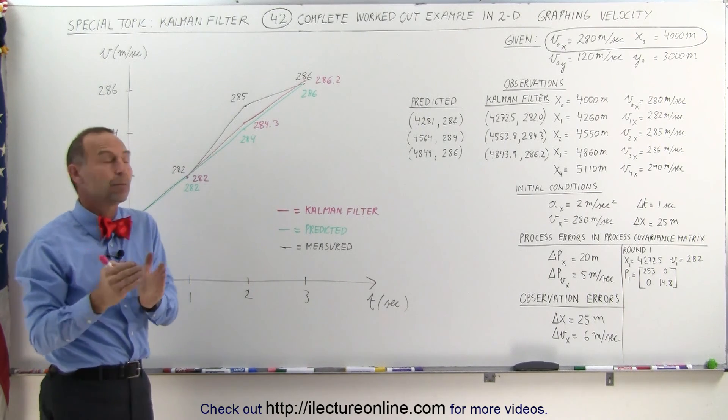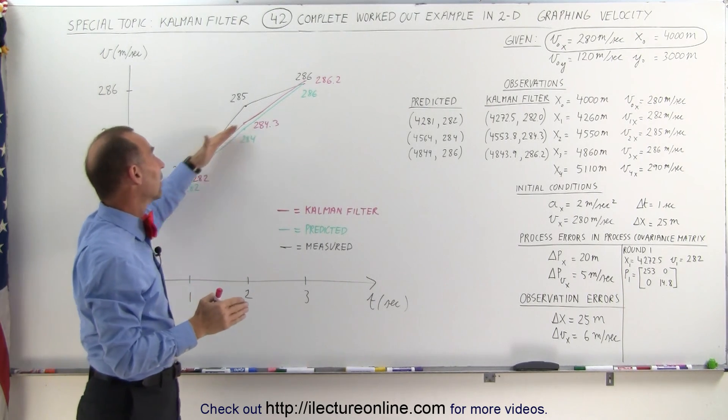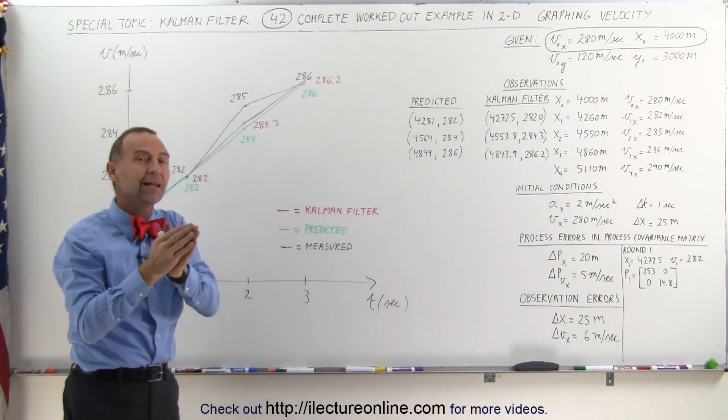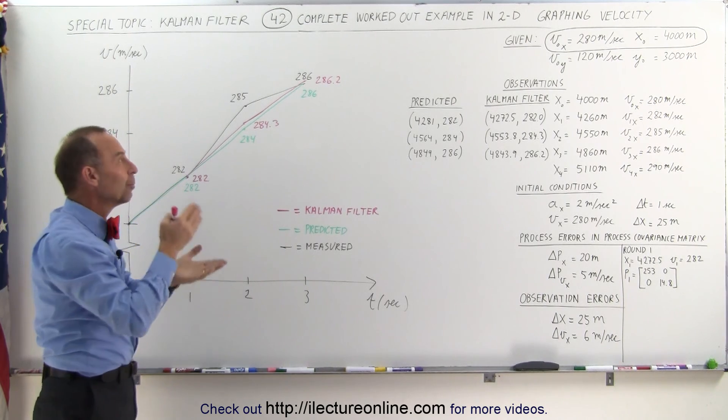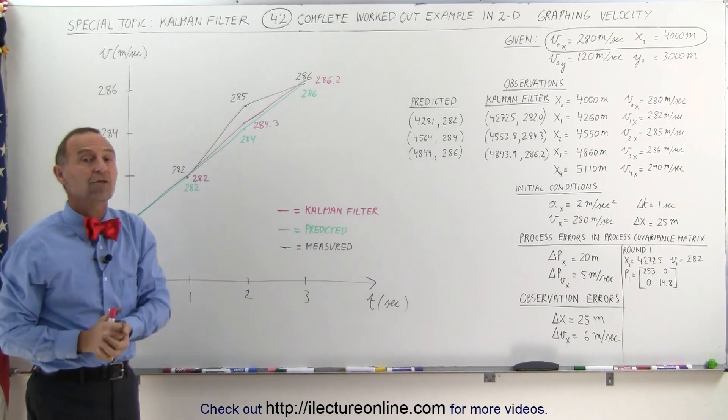The Kelvin filter is just for that purpose to make sure that the Kelvin filter values will fall right in line to where the most probable place is and most probable velocity will be of the item that you're tracking.